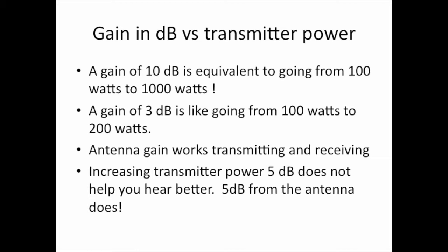Gain in dB versus transmitter power: a gain of 10 dB is equivalent to going from 100 watts to 1,000 watts output with your transmitter. A gain of 3 dB is like going from 100 watts to 200 watts. Antenna gain works both transmitting and receiving. Increasing your transmitter power by 5 dB does not help you hear better, but increasing your antenna gain by 5 dB helps you both be heard better and hear better.